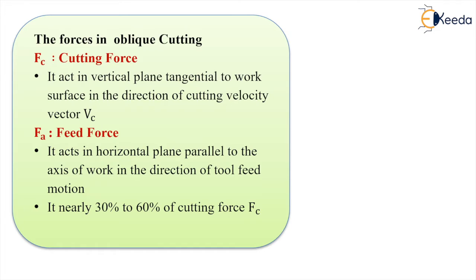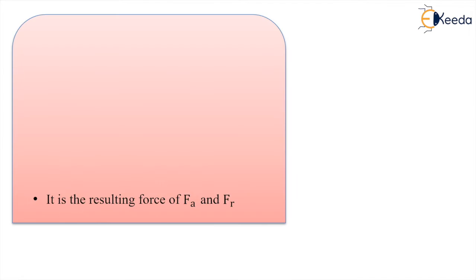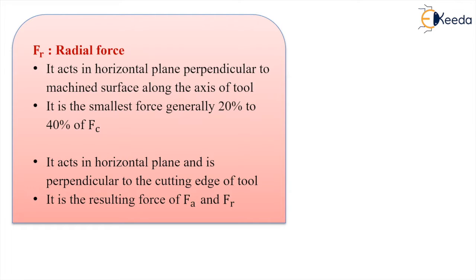The feed force Fa is nearly 30 to 60 percent of the cutting force Fc. The radial force Fr is generally 20 to 40 percent of the main tangential force or cutting force, and this is the smallest force in the metal cutting zone. The maximum force is our main tangential force Fc, then we have the axial force Fa, and then Fr is the smallest force in metal cutting. The thrust force Ft is the resultant of Fa and Fr.